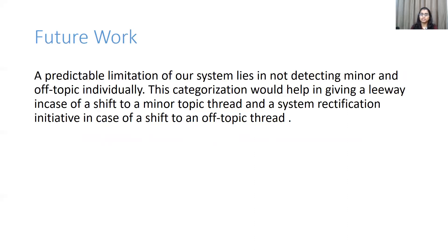A predictable limitation of our system lies in not detecting minor and off-topic labels individually. This categorization would help in giving leeway in case of a shift to a minor topic, and provide a system rectification initiative in case of a shift to an off-topic segment. Additionally, we can see multiple applications in dialogue summarization and information extraction by classifying dialogue into off-topic and major topic categories.